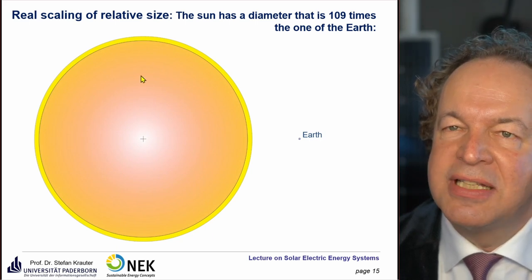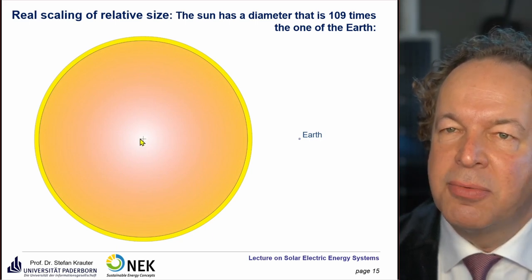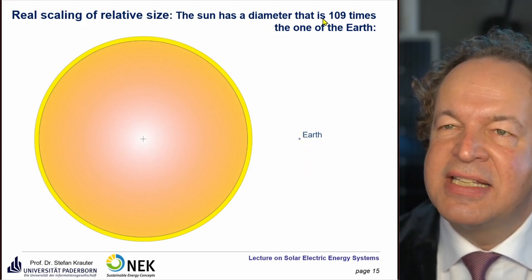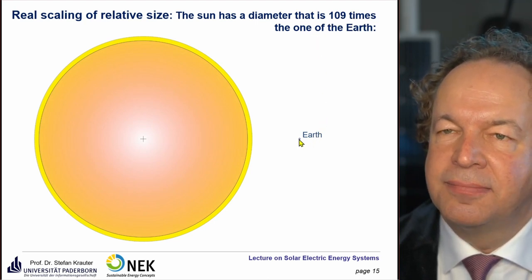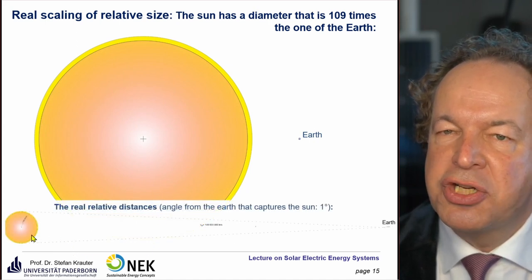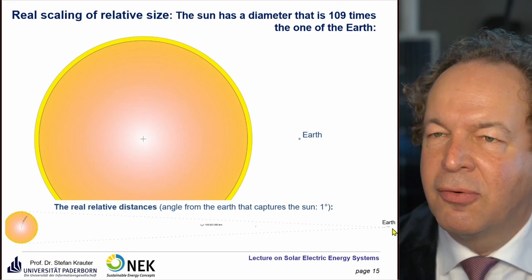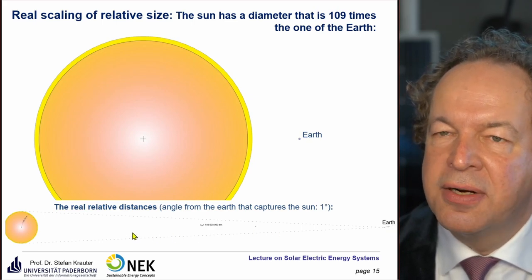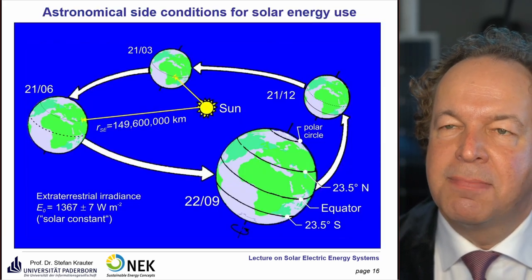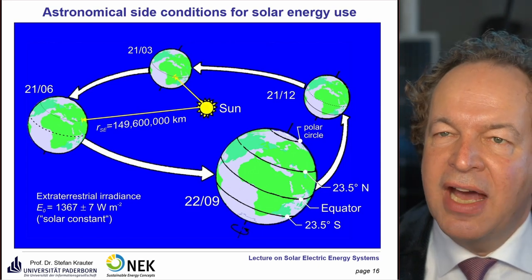This shows the real scale — not the real distance, but the real scale — of the sun diameter and Earth diameter. The diameter of the sun is 109 times larger than that of the Earth. At the actual distance, the Earth is quasi-invisible next to the sun, illustrating the astronomical situation.